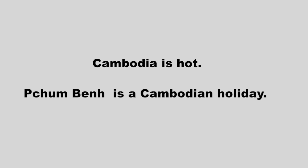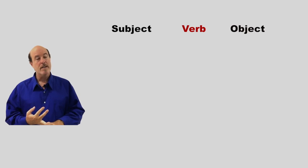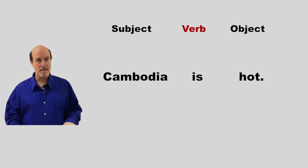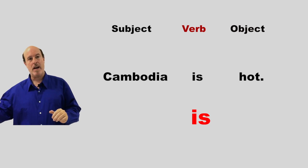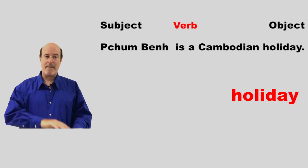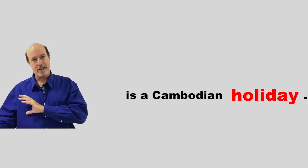Let's try another example: Cambodia is hot. One more example: Pichu bin is a Cambodian holiday. In Khmer: Pichu bin kuchia pan tiyat. So these are all simple sentences because they have a subject, a verb, and an object. Cambodia is hot — the verb is 'is'; it connects the subject, Cambodia, and the object, hot. The next sentence: Pichu bin is a Cambodian holiday — the object is holiday. It's after the verb.